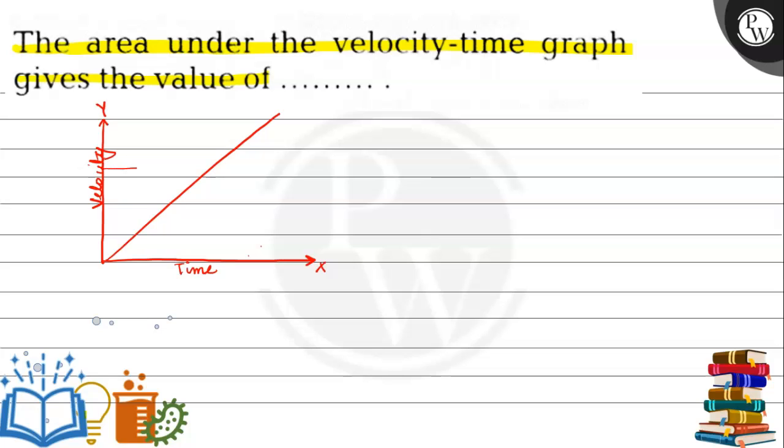Now let's consider the area. We've been asked about the area - for example, this shaded region. This is the area under the velocity-time graph.